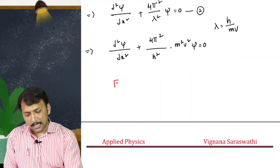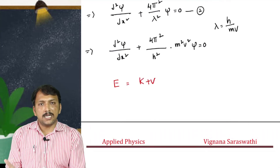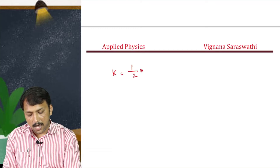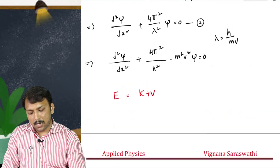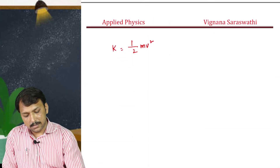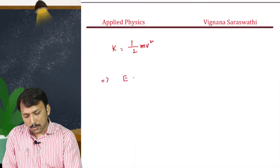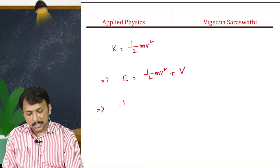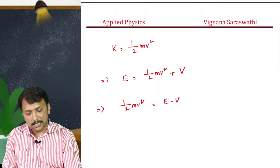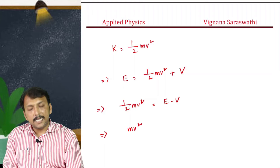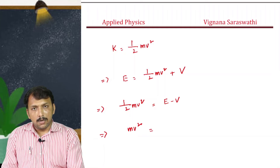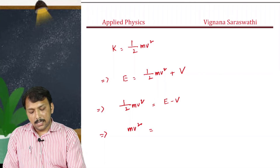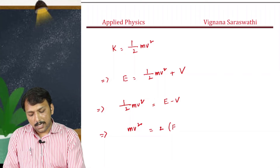To simplify further, we consider the total energy: E equals kinetic energy plus potential energy, where kinetic energy K equals (1/2)mv². From this, (1/2)mv² equals E minus V, so mv² equals 2(E minus V). Multiplying both sides by mass m gives m²v² equals 2m(E minus V).